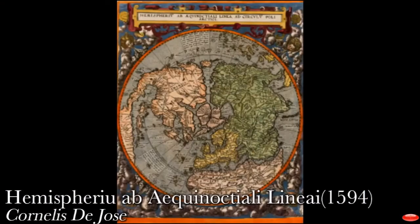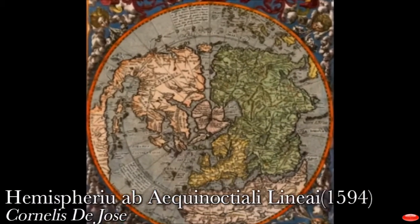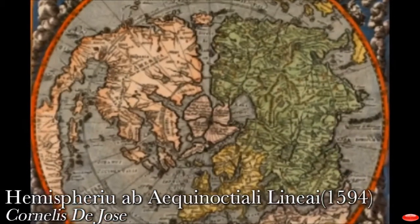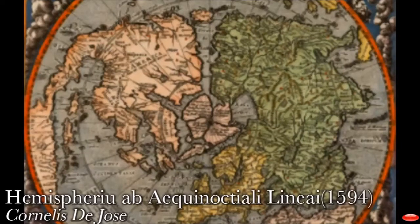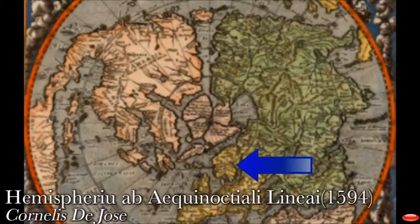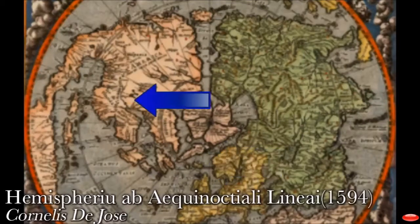This map is from 1594, made by Cornelius de Jose. At first glance we notice how magnified the North Polar region is compared to previous maps. Instead of Oronse Fine's version with large bodies of water separating the islands, we have the four-continent system divided by thin canals which meet at the center, where there is again seemingly a massive rock. For reference, we have Greenland, Scandinavia, Iceland, and Canada.